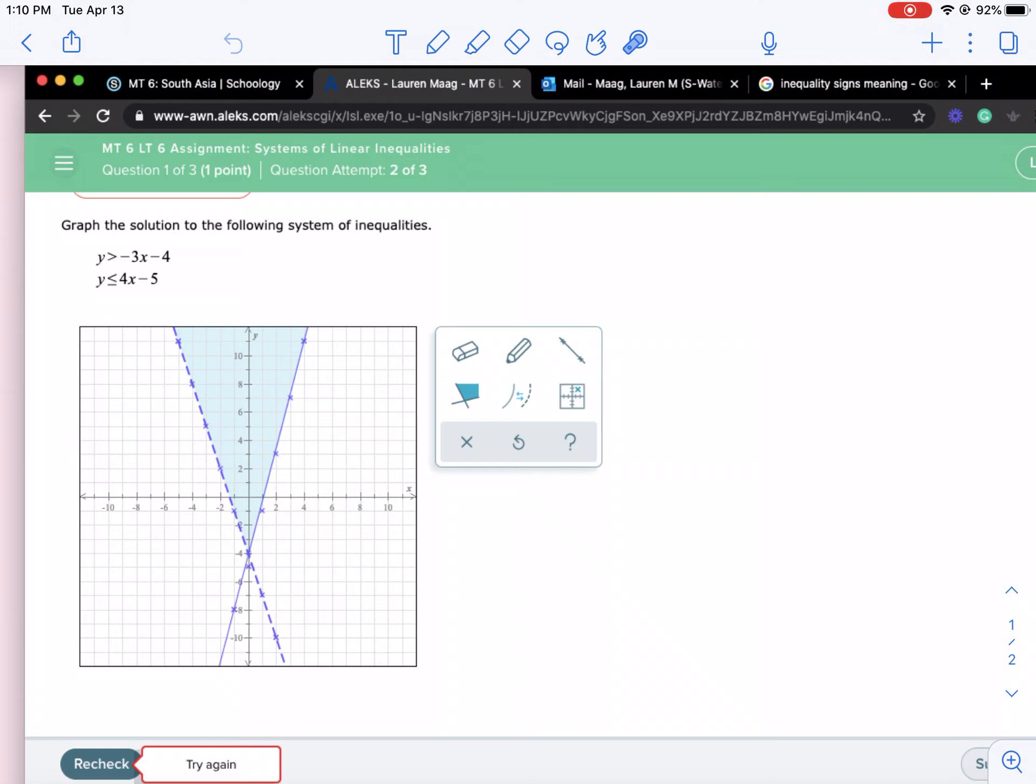However, I think you made a mistake on the second line because your y-intercept is negative 5. And it even looks like you have negative 5 graphed there. You just drew the line going through the wrong part.